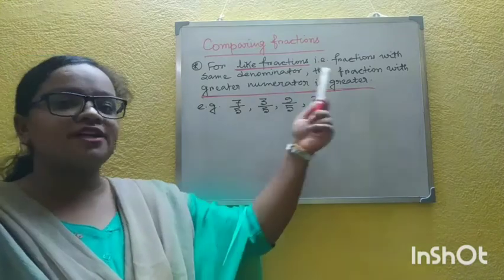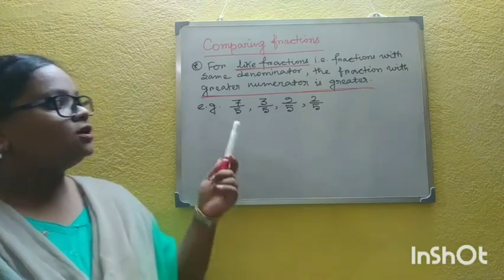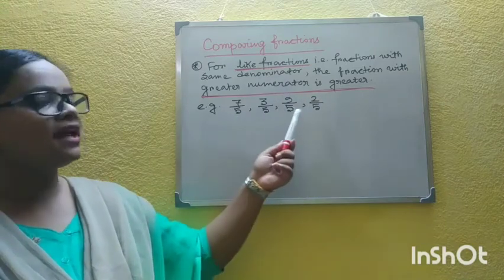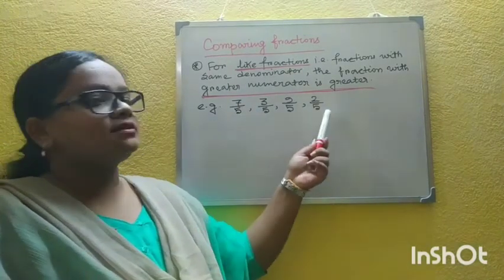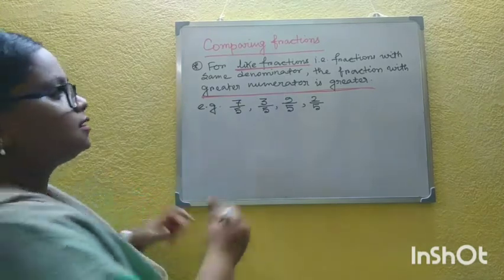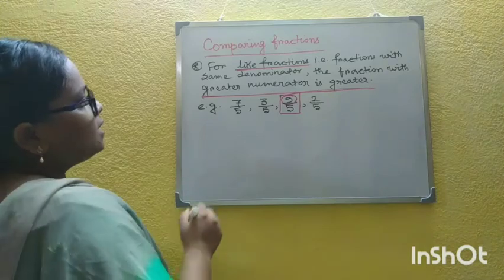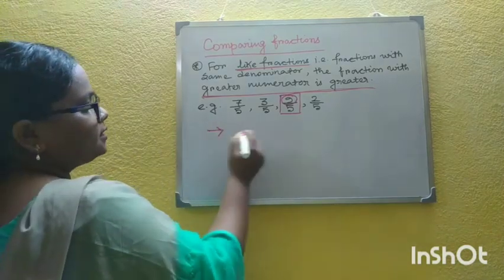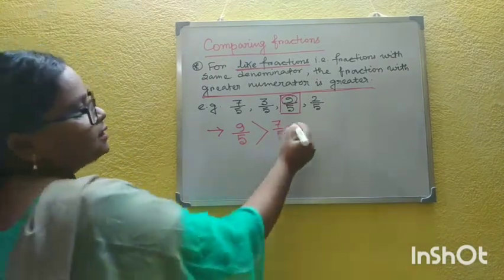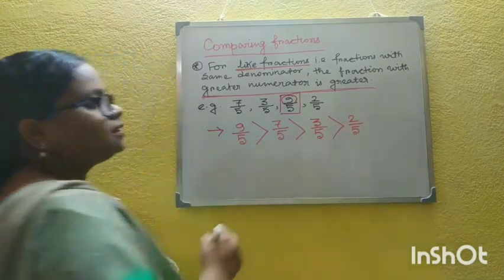First point: for like fractions, that is fractions with the same denominator, the fraction with the greater numerator is greater. Look here: 7/5, 3/5, 9/5, 2/5. All these are like fractions as the denominator in all cases is equal, but numerators are different. Since 9 is the greatest numerator, 9/5 is the greatest fraction. Arranged in descending order: 9/5 > 7/5 > 3/5 > 2/5.